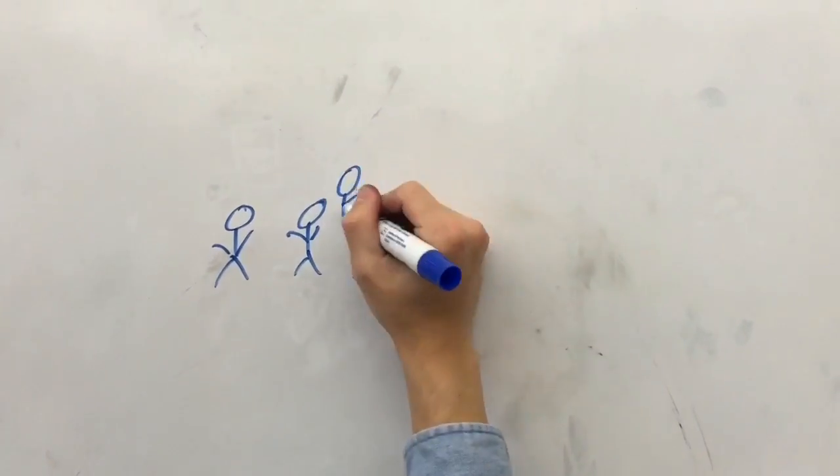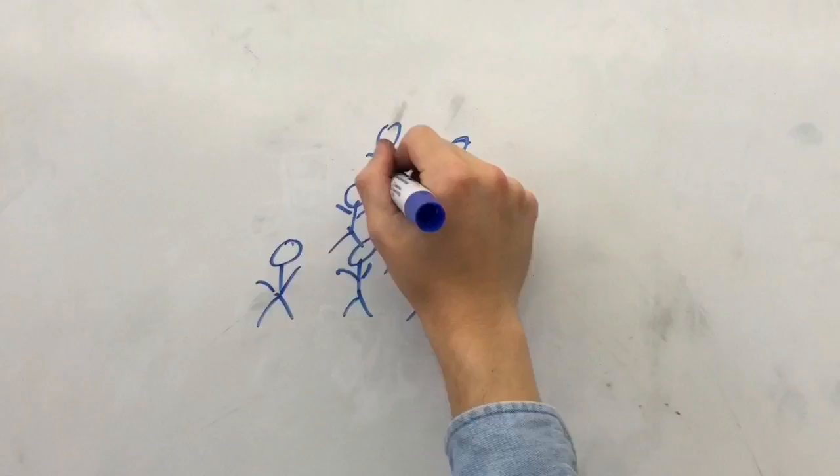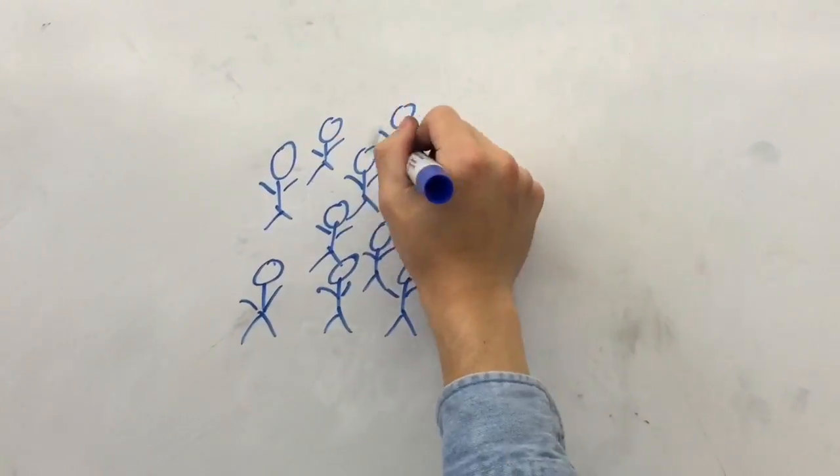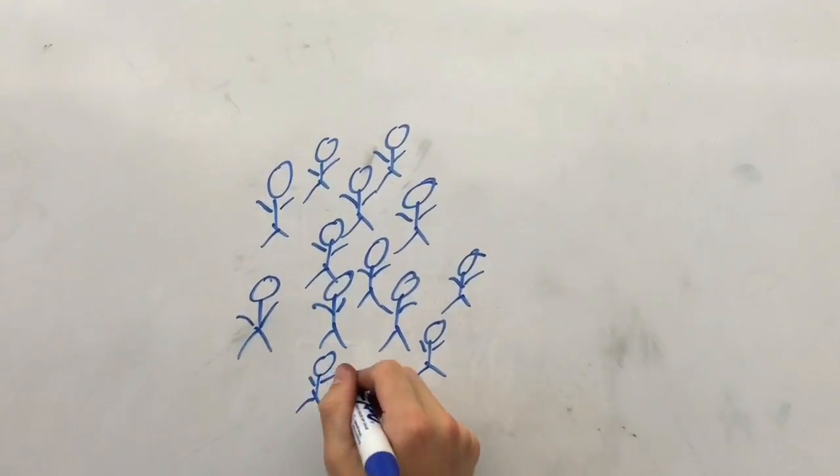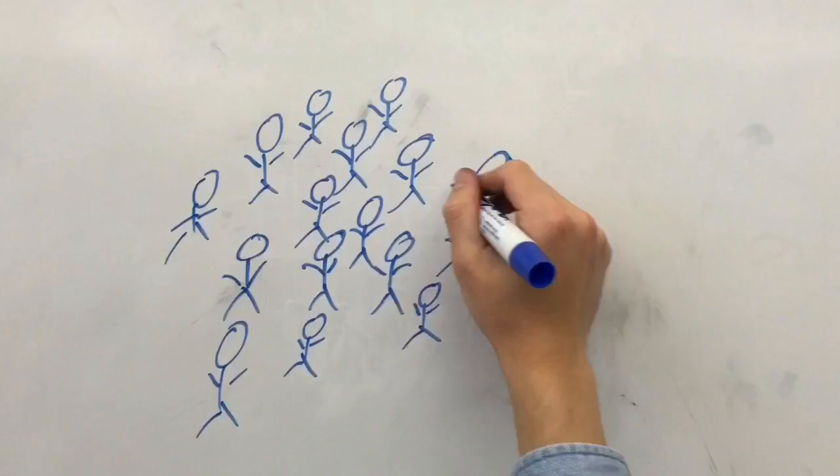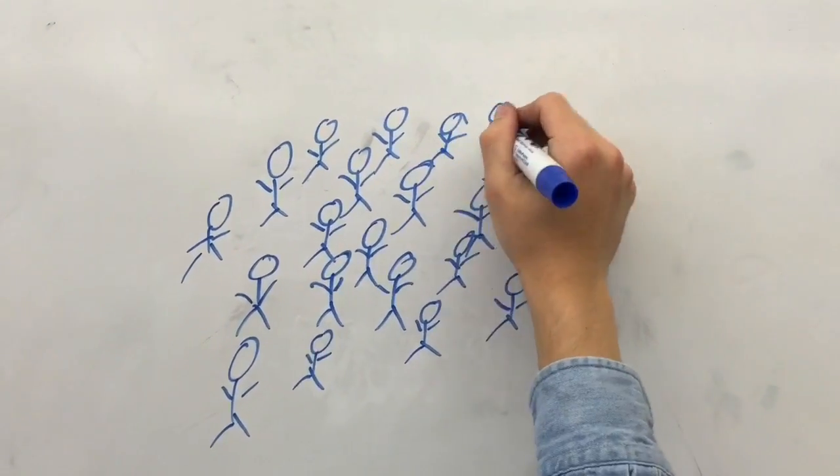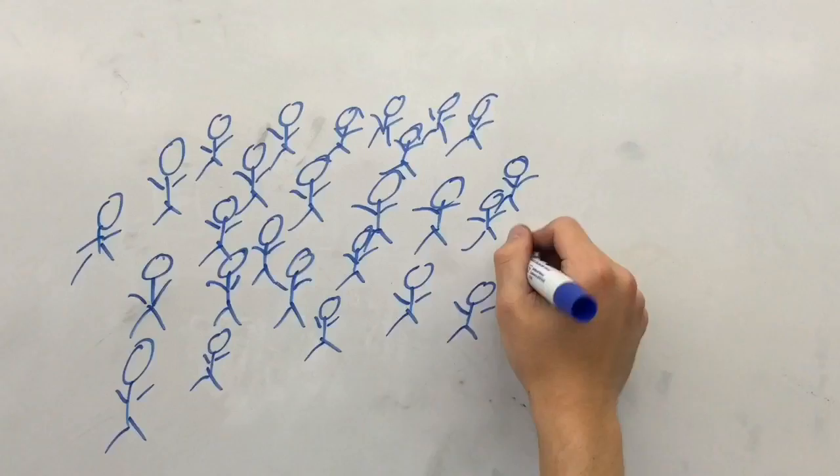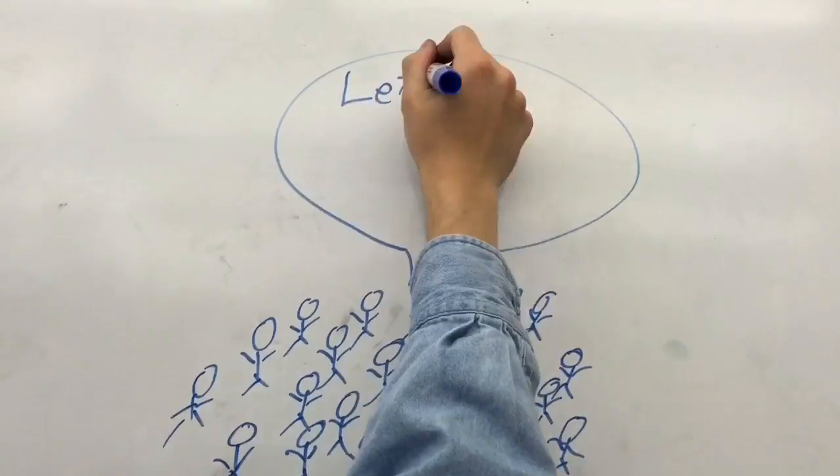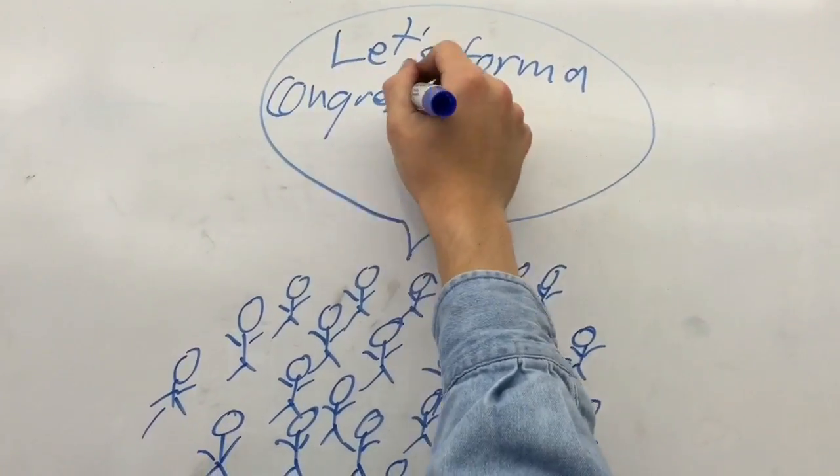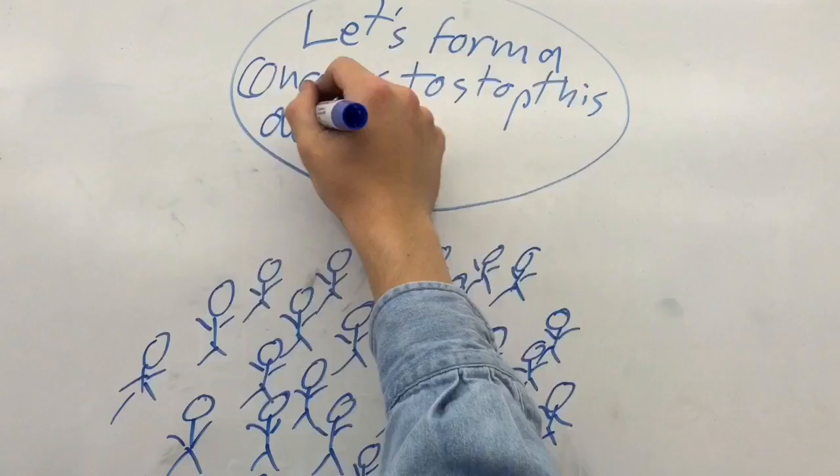In order to stop this hated, oppressive Stamp Act, the outraged colonists formed the Stamp Act Congress of 1765. The Congress brought together 27 distinguished delegates from nine different colonies in order to protest the hated act.